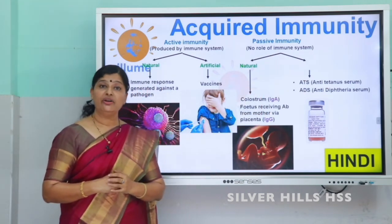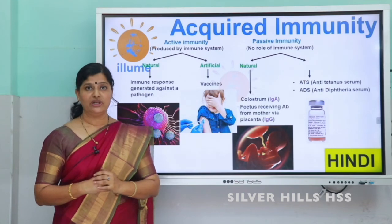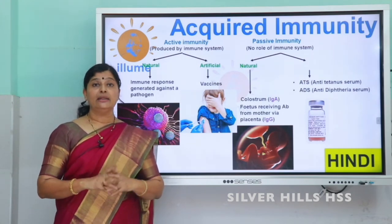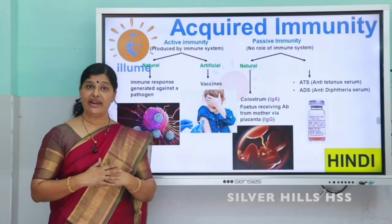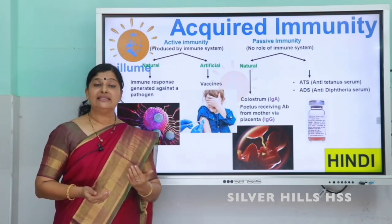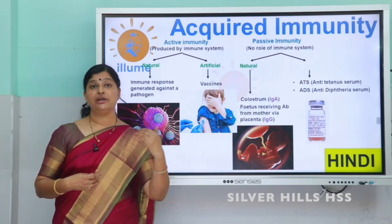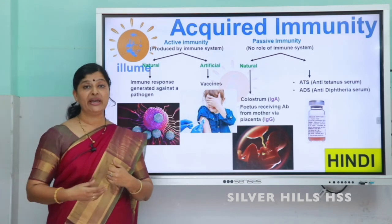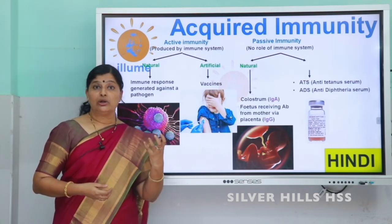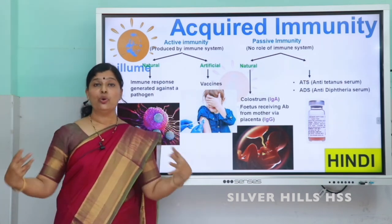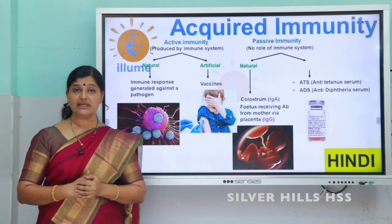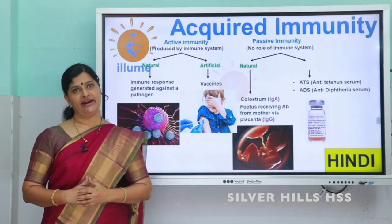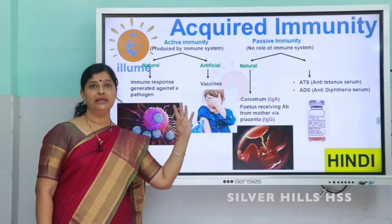The next category is artificial passive immunity. For example, during a snake bite, the person is taken to the hospital and doctors immediately give anti-venom. Anti-venom is the antibody against the antigen of the snake's venom — ready-made antibodies are given. Snake's poison is very strong and may enter the neural system, causing death. So immediately ready-made antibodies are given so that the person can be saved. These are the different types of acquired immunity.